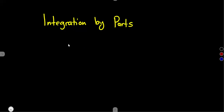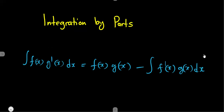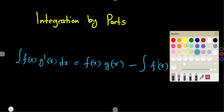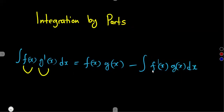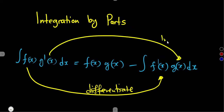Remember, this is a condition where you are given two functions from the formula. The formula is: the integral of f(x) times g'(x) dx equals f(x)·g(x) minus the integral of f'(x)·g(x) dx. This formula has two functions — f(x) and g'(x). One of these functions is supposed to be differentiated, which is f(x), and g'(x) is supposed to be integrated.